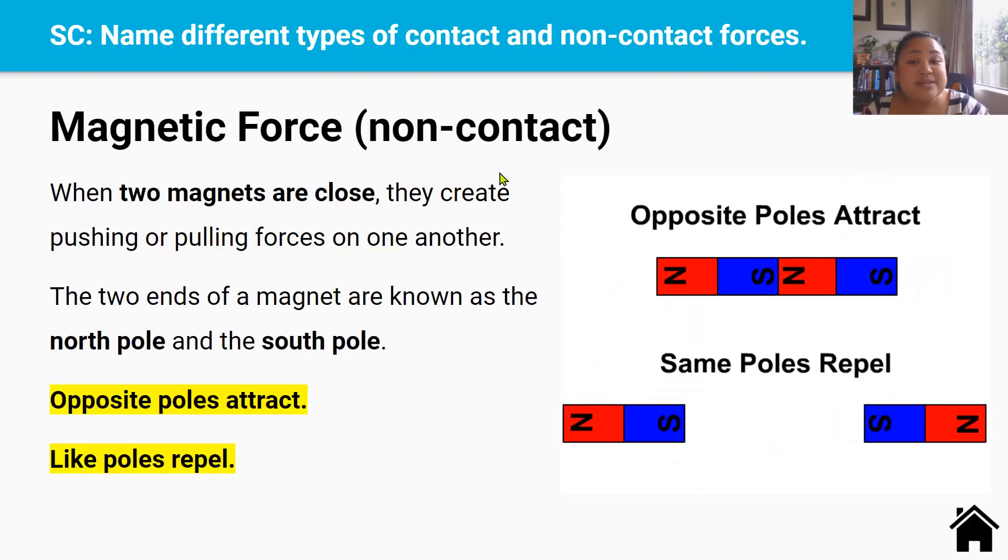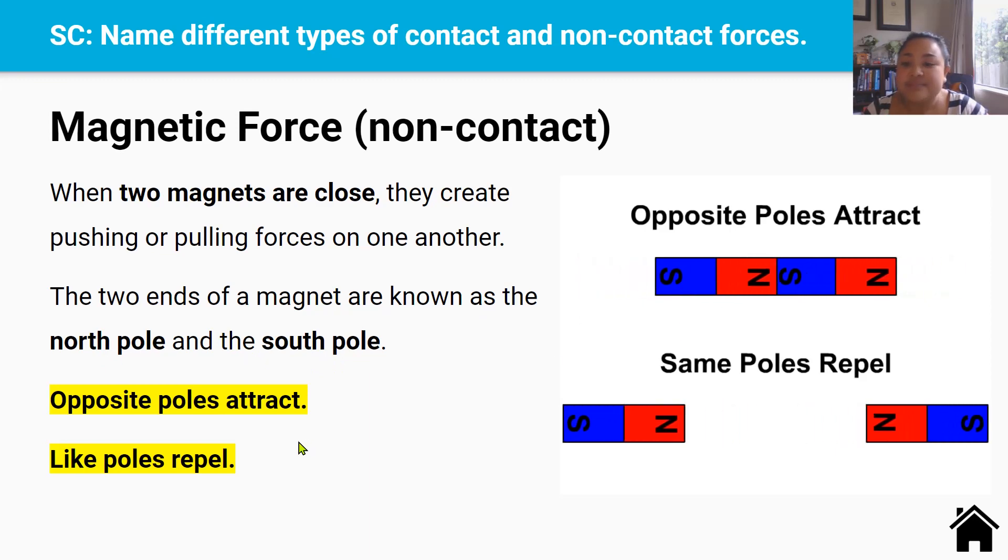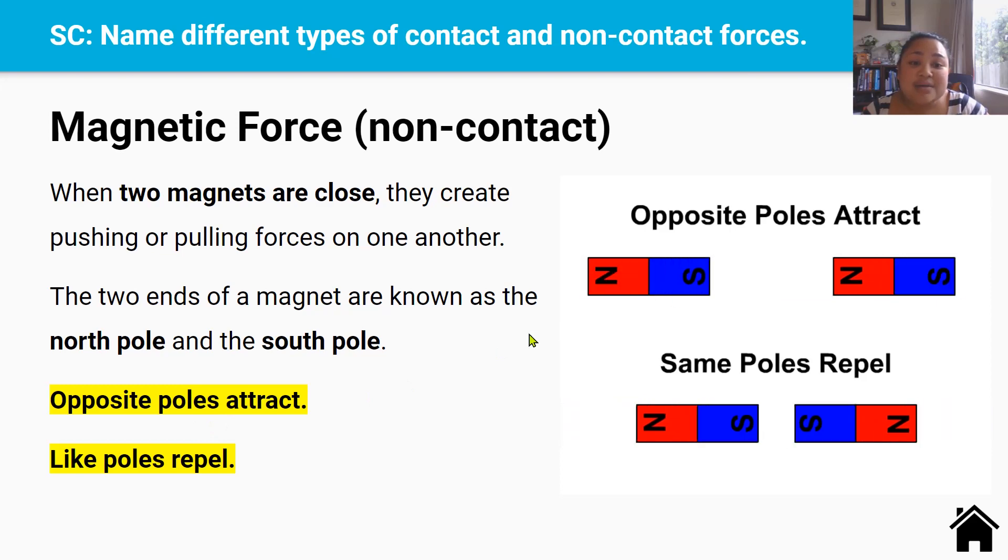Magnetic force is our second example of a non-contact force. And it's when two magnets are close, they create a pushing or a pulling force on one another. The two ends of the magnet, so this end here and this end there, are known as the north pole and the south pole. That's where it's got the N for north and S for south. Opposite poles attract. So north and south attract each other. Like poles repel. North-north repel and south-south repel.